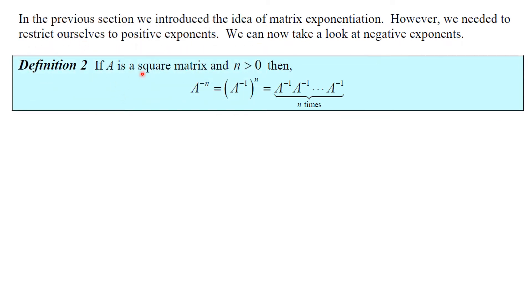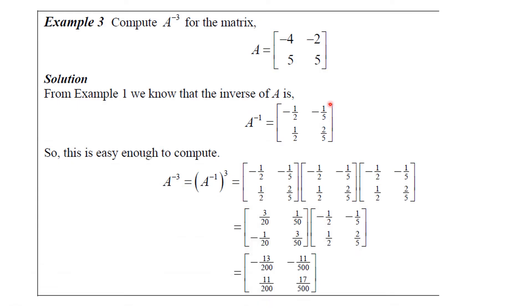We extend our notion of exponents to negative exponents: A to the minus N is the inverse of A raised to the N — that is, A⁻¹ multiplied by itself N times, if it exists. For example, let's compute A to the minus 3 for a given matrix. We already know A⁻¹ from an earlier example, so we take A⁻¹ times A⁻¹ times A⁻¹. Performing the multiplications step by step gives us the resulting 2×2 matrix for A⁻³.